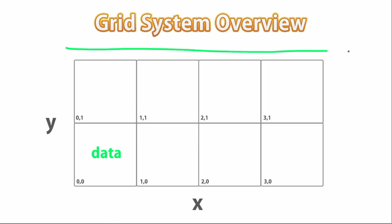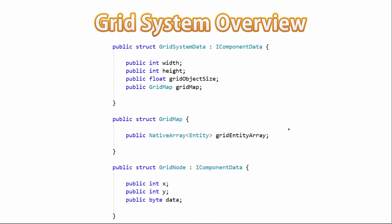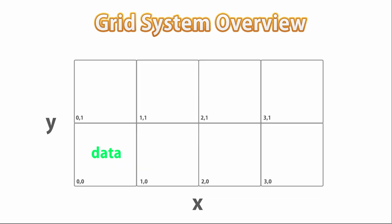This allows us to define both the entire shape of the actual grid and define any kind of data to place in each grid position. You might wonder why we have a GridMap struct — why not just directly store the native array directly? The reason is that later on when we implement pathfinding, we're actually going to need multiple grid maps, so later on we're going to refactor this to be a native array of grid maps. But if we did not need that, then sure, we could just store it directly. Alright, this is the design we want to implement, so let's start doing that in the next lecture.